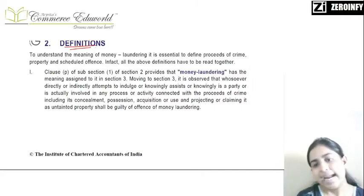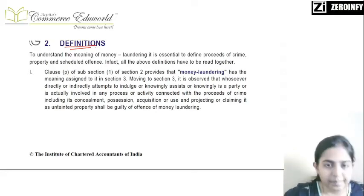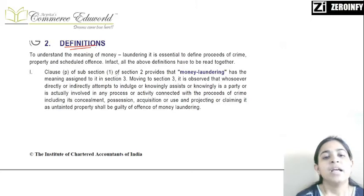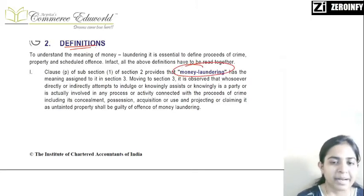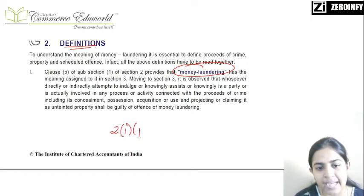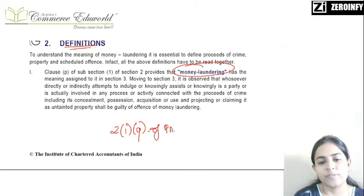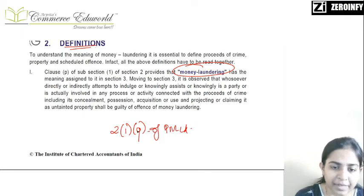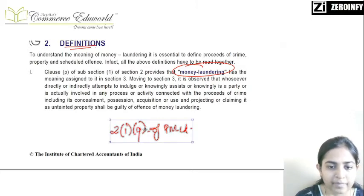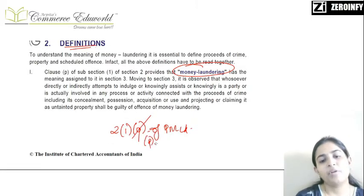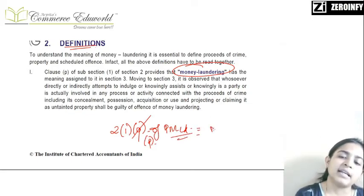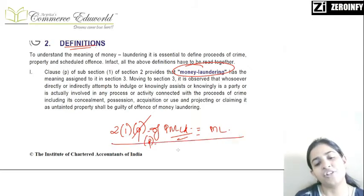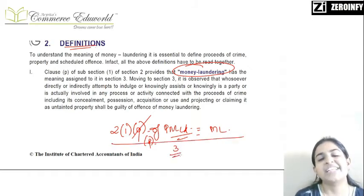We are going to discuss some important definitions. First, the definition of money laundering - it is found in Section 2, subsection (1), clause (p) of PMLA 2002. However, when we read the text of that section, it redirects us to Section 3 for the actual definition. So moving to Section 3, we observe that the definition of money laundering is fully given there.